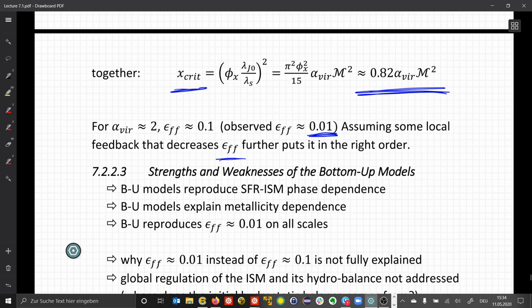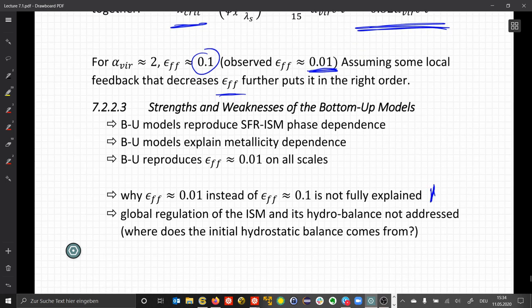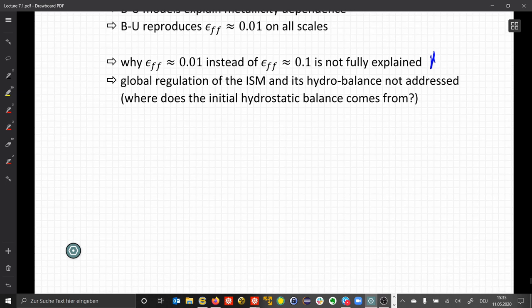However, this transition from 0.1 to 0.01 is somewhat a qualitative explanation and not yet fully explained. And we have no inclusion of any global regulation of the interstellar medium and its hydro balance. This is not part of the model. So we don't know where any initial hydrostatic balance comes from. Again, we see some observations can be explained and others remain unexplained. This is one of the reasons why star formation is one of the active research fields in astrophysics.